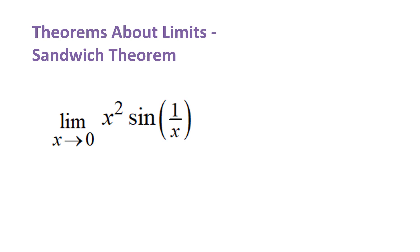The other big deal theorem we talked about was about functions that agree at all but one point. We use that theorem when we were able to simplify the function into another function using algebra to change the domain at a single point. There's not really any simplification we can do on this problem — one of the x's is inside the trig function and the other x squared is not, so there's nothing we can do to simplify those. This is the kind of problem where we're going to use sandwich theorem.